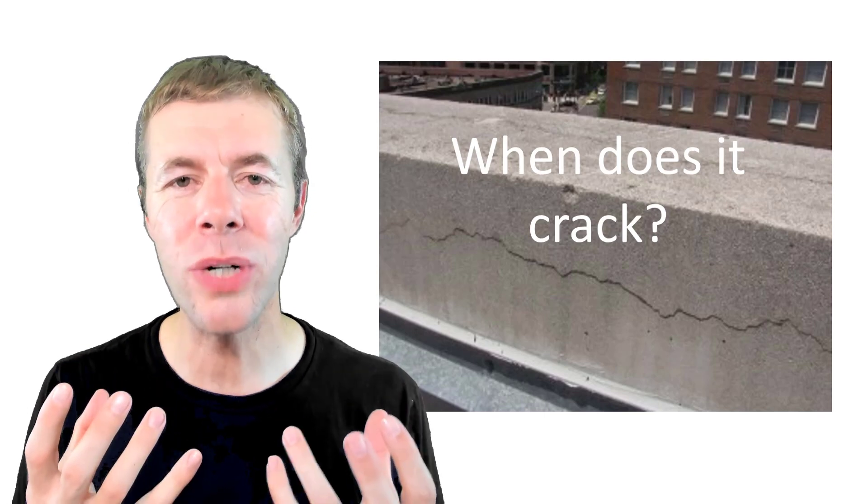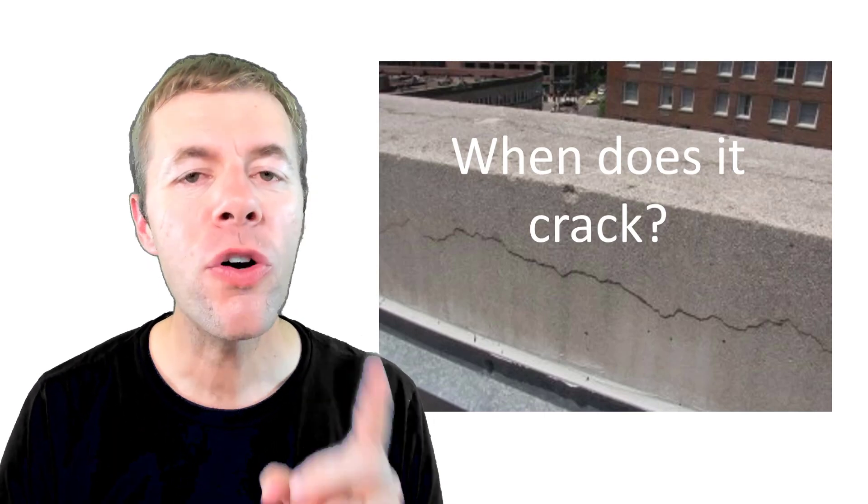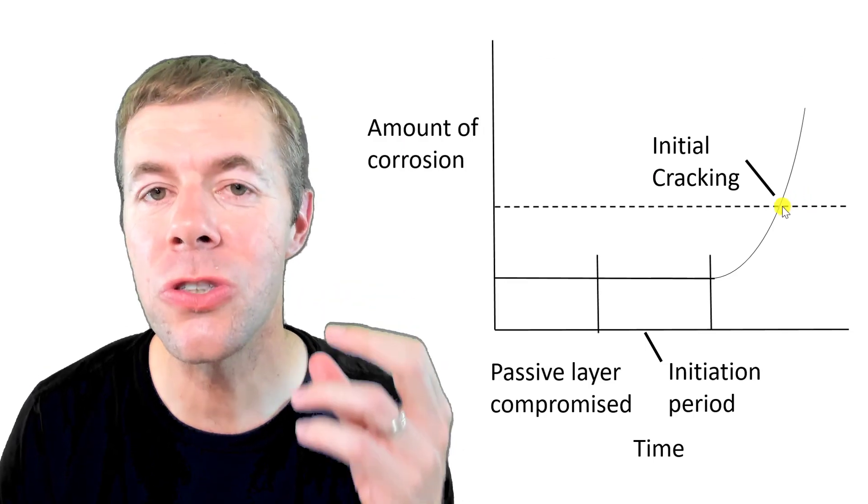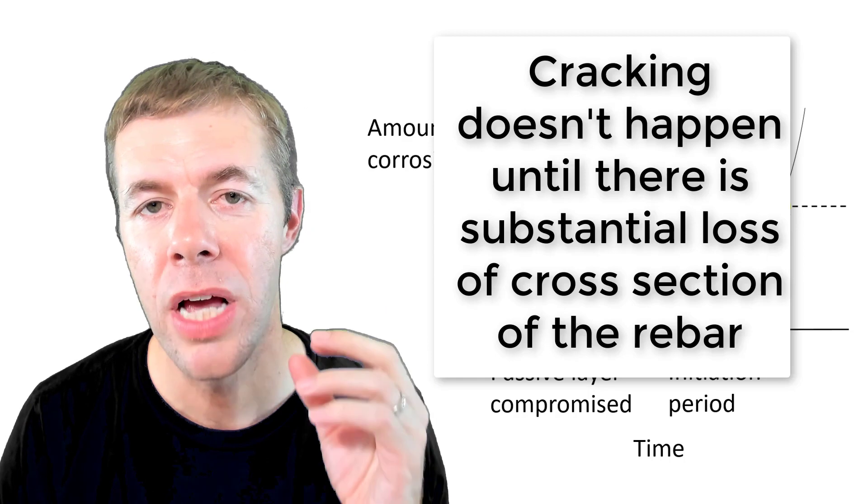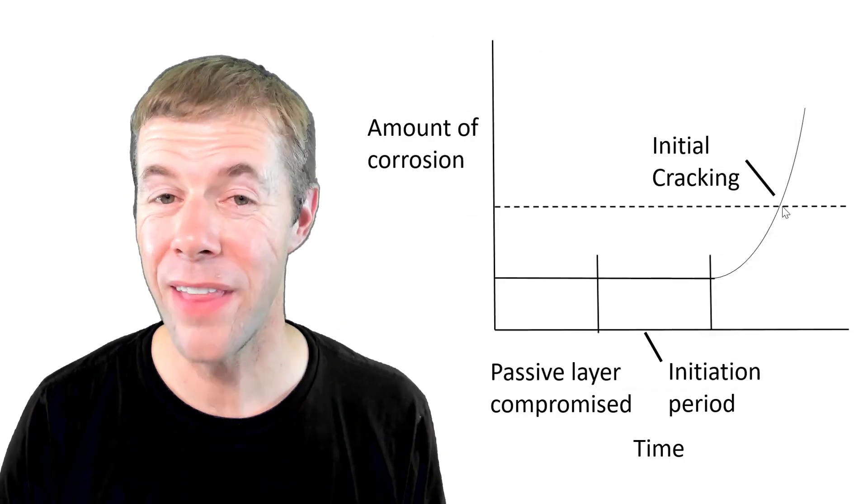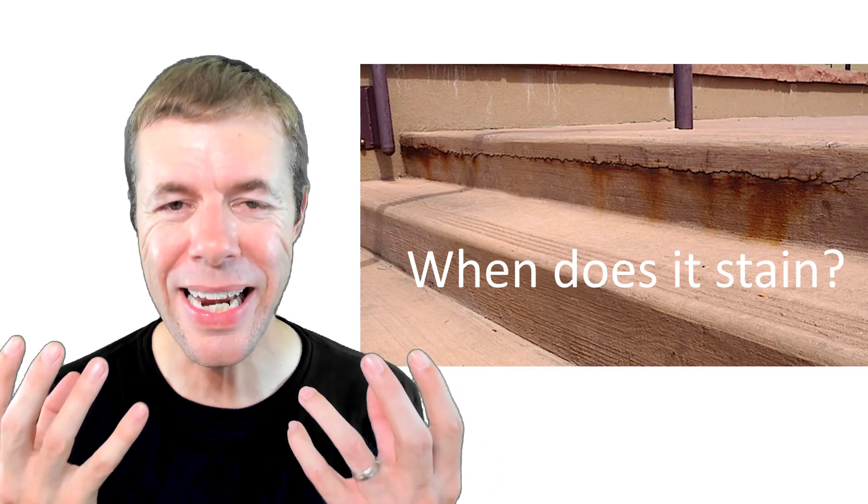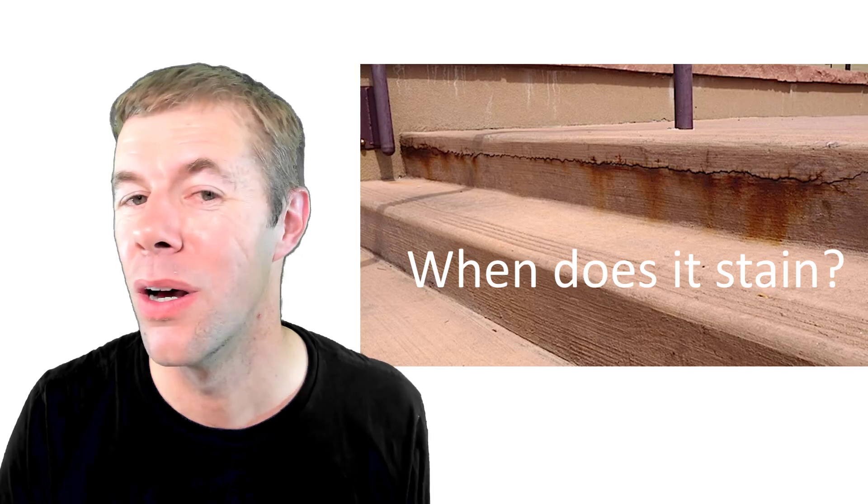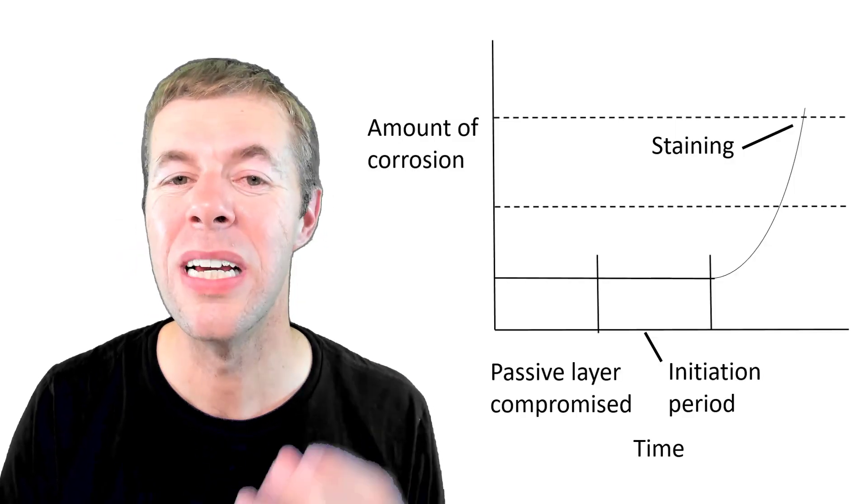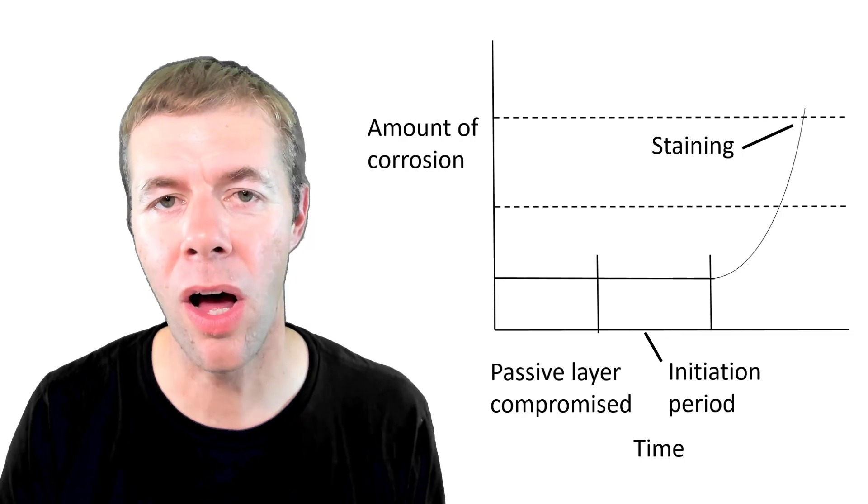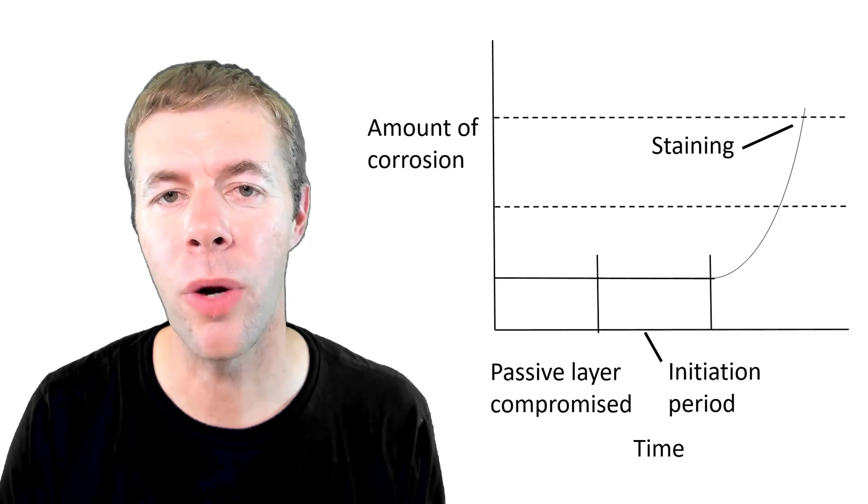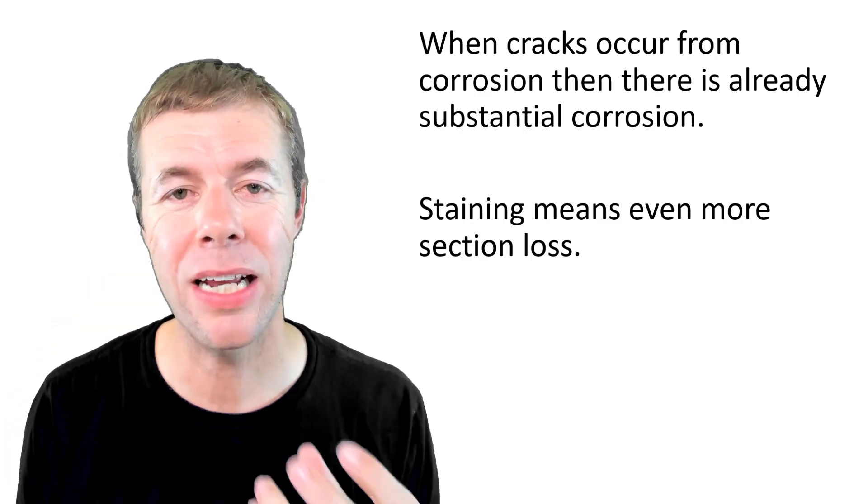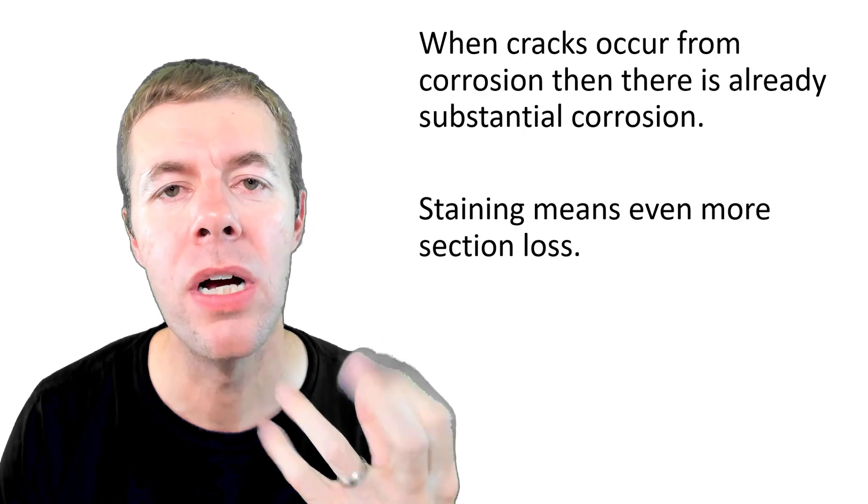So when does the concrete start to crack? Well if we go back to our graph, cracking doesn't happen until way up here. It doesn't happen until there's substantial loss in cross section of the rebar. That's kind of a big deal. So when does staining happen? That's when these rust stains start oozing out of the concrete. Well they may happen up here when significant cross section loss is happening to our reinforcing steel. So when cracks occur, corrosion is already starting to show substantial corrosion. In staining we see even more section loss.